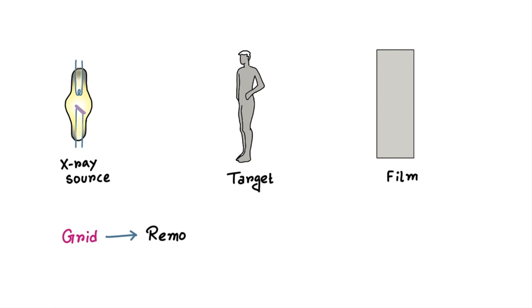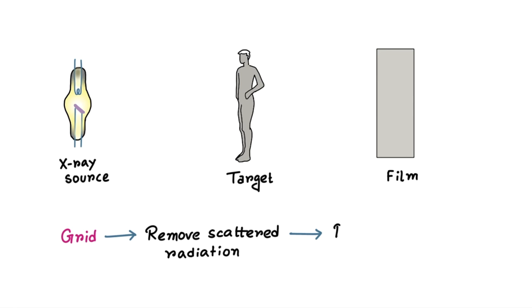First question is why it is used. Grids are like a barrier. It is used to remove the scattered radiation which eventually improves the image contrast.